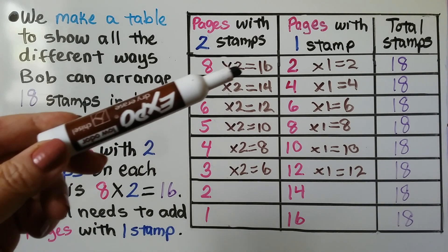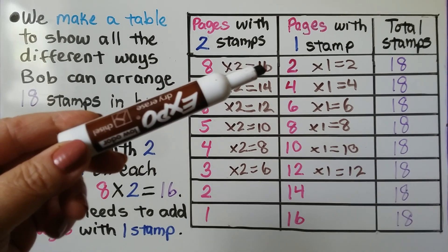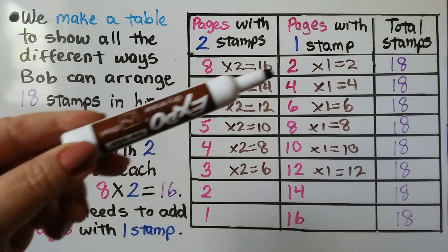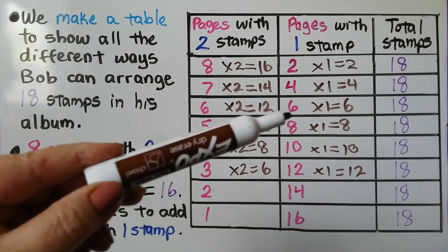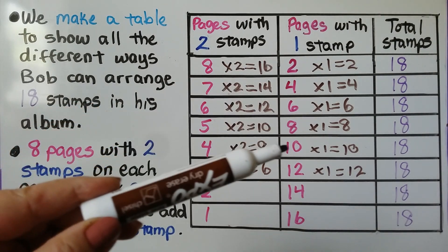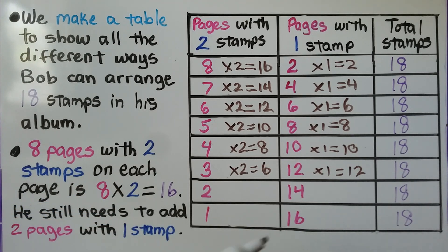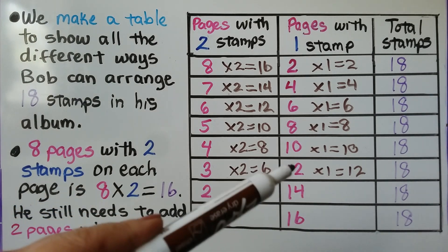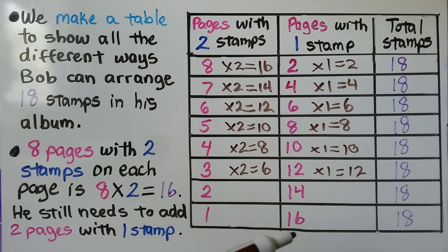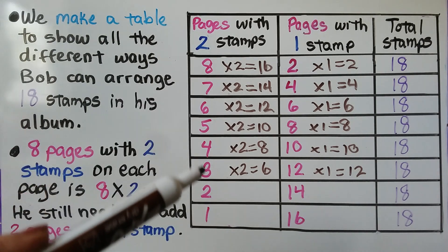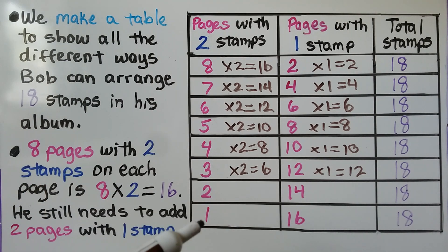...five, four, three, two, one. And for the pages with one stamp, it's going two, four, six, eight, ten, twelve, fourteen, sixteen. These are skip counting by two, while the pages with two stamps are going down by one each time.